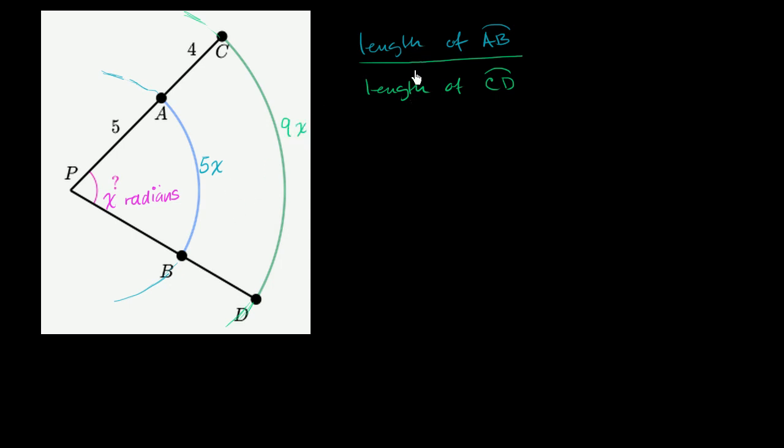So what's the ratio of these two lengths? Well, the smaller arc AB would have a length of 5x. Arc CD would have a length of 9x. So the ratio is 5 to 9.